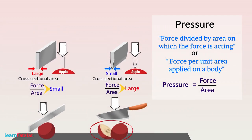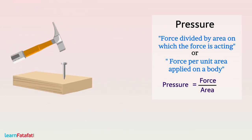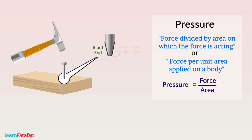Another example is pushing an iron nail into a wooden block. If the end of the iron nail is not sharp, i.e. blunt, then the area of cross-section is larger, due to which the pressure applied on the wooden block is smaller. Hence, it is difficult to push the iron nail.